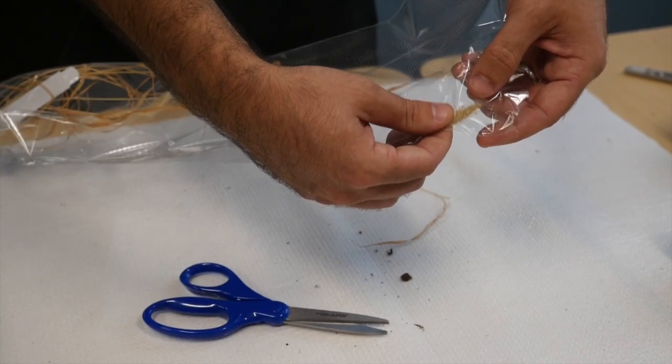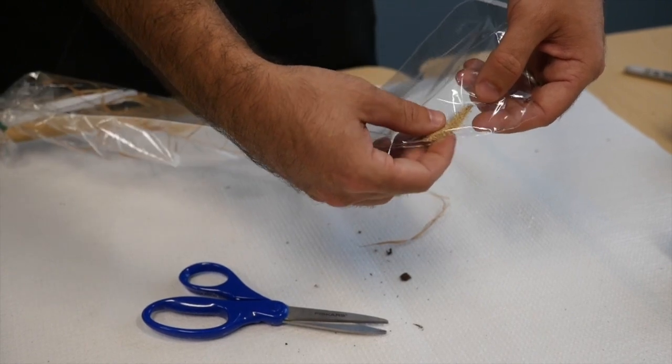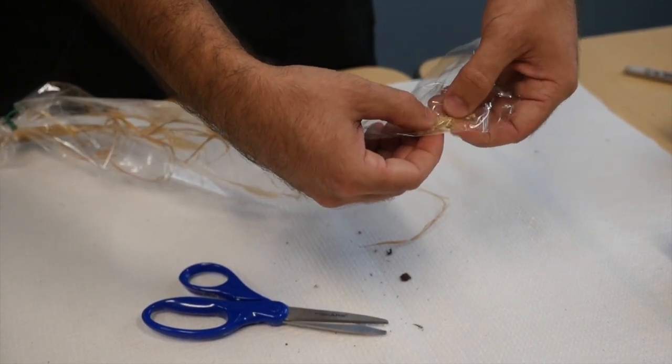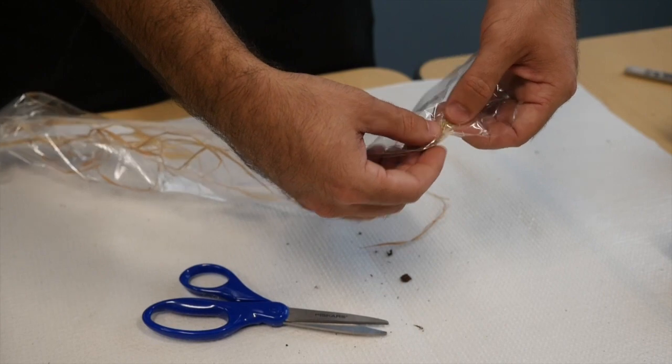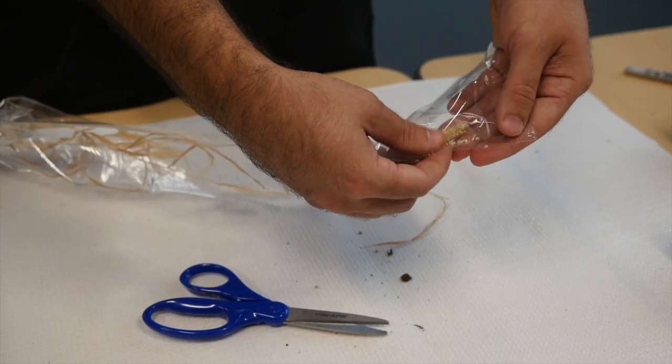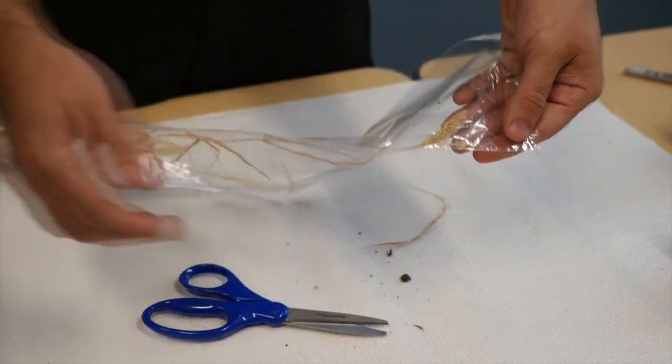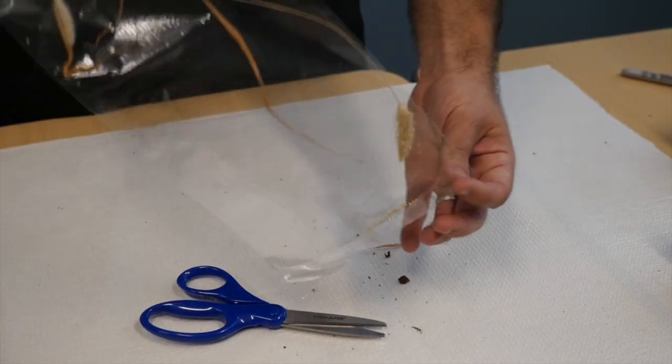All you have to do is slightly rub the panicle and the seeds will start to fall off as you can see there. Do that for every panicle.